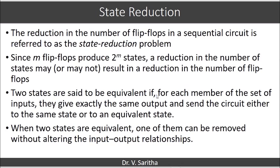We consider two states similar when we can reduce one state — that is, one state will be eliminated and one state will be retained. So how can we say that two states are equivalent? That is, for each member of the set of inputs, they give exactly the same output and send the circuit either to the same state or to an equivalent state. In other words, two states are similar when that particular state gives the same next state and same output for all combinations of external inputs. In such a case, one state will be retained and all other similar states will be eliminated.